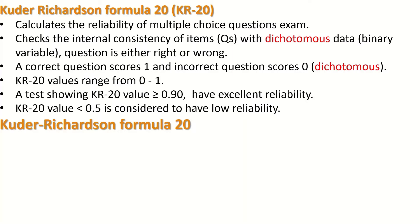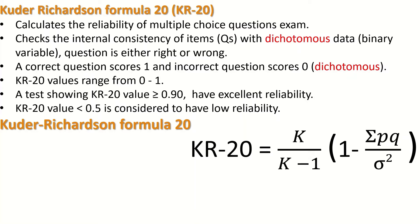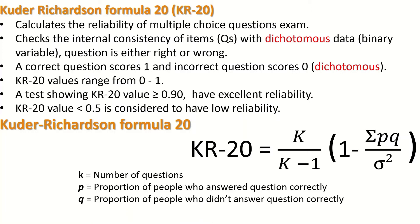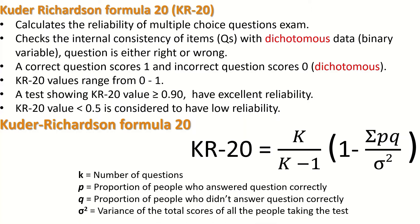Kuder-Richardson Formula 20 is published by Kuder and Richardson. The KR20 equals K divided by K minus 1, multiplied by 1 minus the summation of P multiplied by Q divided by the variance. K stands for the total number of questions. P stands for the proportion of people who answered the question correctly. Q is the proportion of people who did not answer correctly. And the variance is of the total score for all students participating in the test.